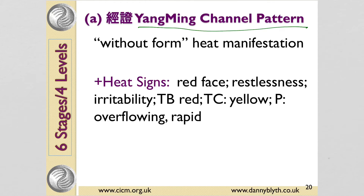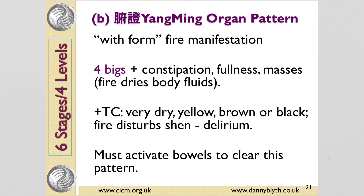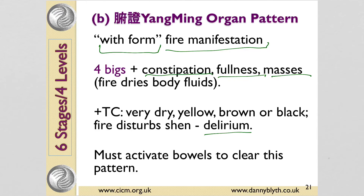There are two variations of the Yang Ming stage. There's a channel pattern, said to not have form or to be a heat presentation. With this we get the four bigs, along with red face, restlessness, irritability, yellow tongue coat, and overflowing rapid pulse. Then there's a version with form, or a fire manifestation. Fire damages the body fluids, so we get constipation, fullness, masses, and it disturbs the shen — so you can get delirium and a nasty tongue coating. With this pattern you have to not only clear the heat from the Qi level, but also activate the bowels.